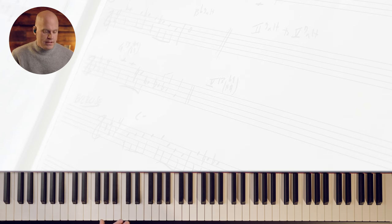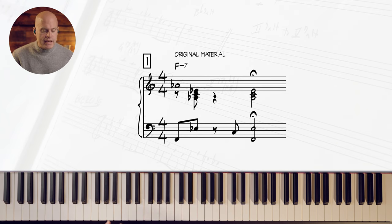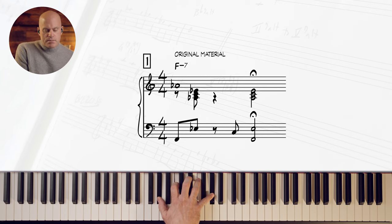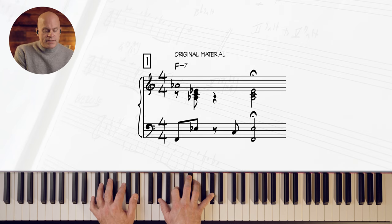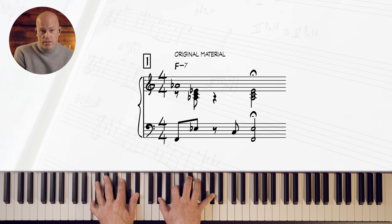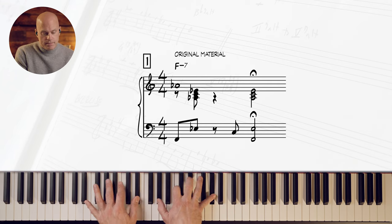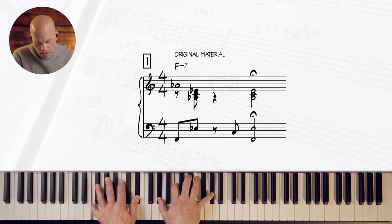Bar one is our two chord. And we have F minor seven. And what Kenny is doing, he's breaking it up. So he's got the root on the top, and then he's playing three, five, flat three, five, flat seven. And then he's got this shell voicing root seventh and the fifth, but he's breaking it up.